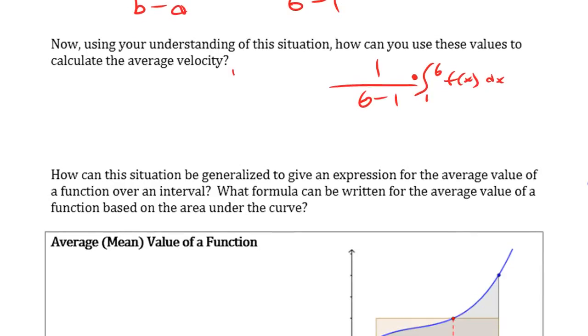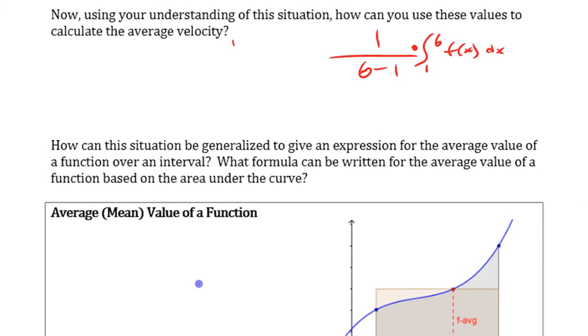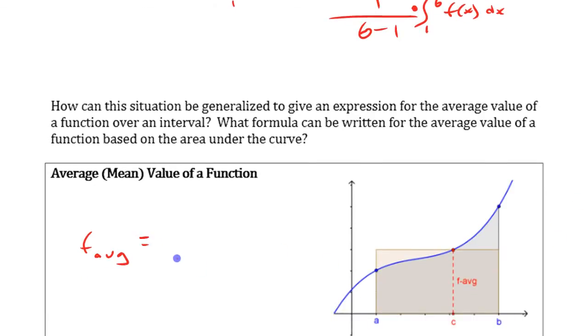In general, then, in general, that average value, F average, is going to be the area, A to B, of F of X. Integral from A to B of F of X, just divided by the width of the interval.